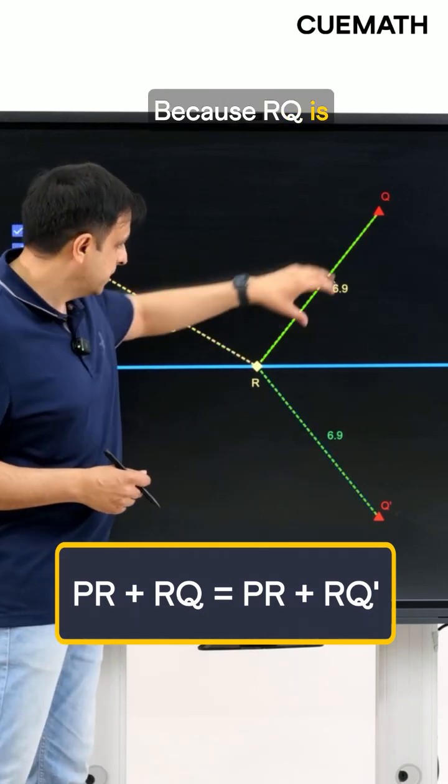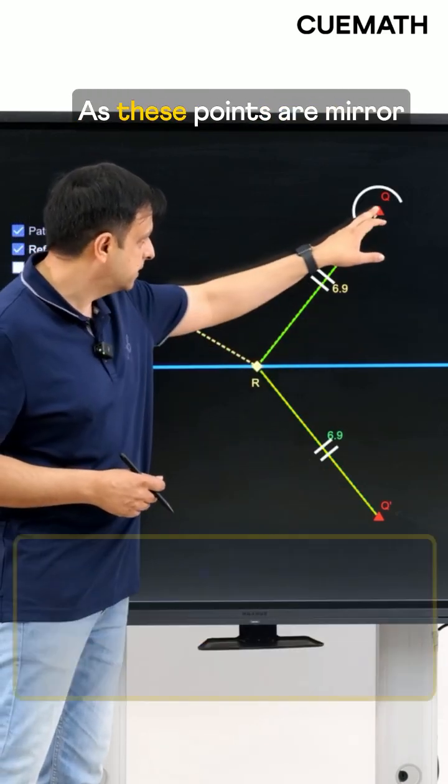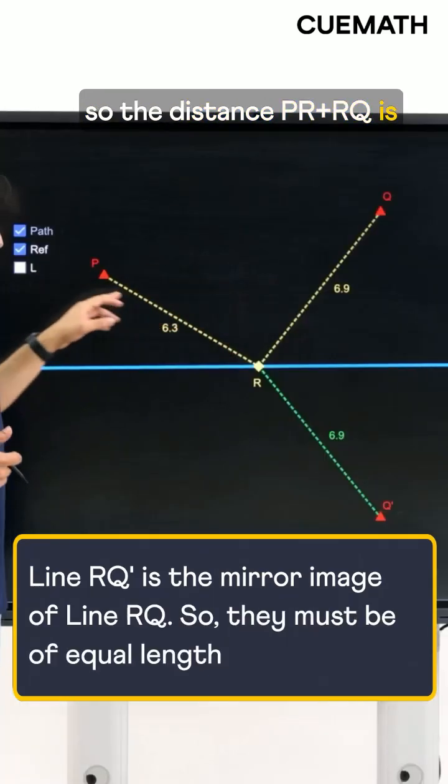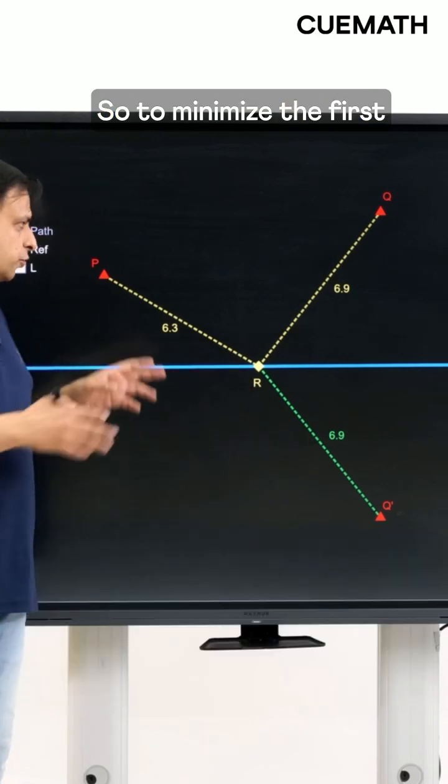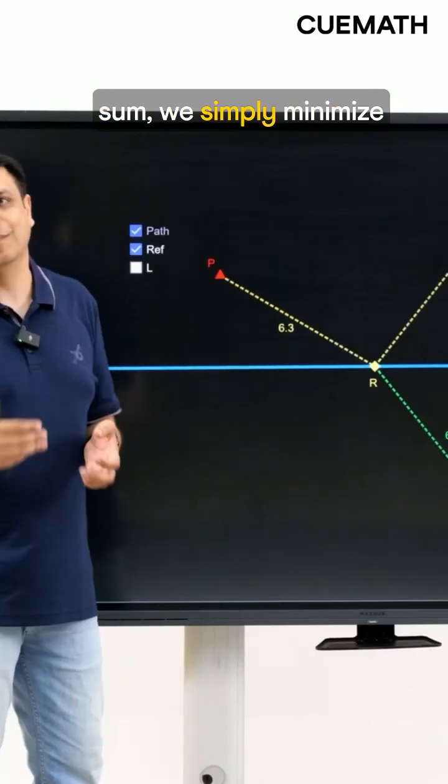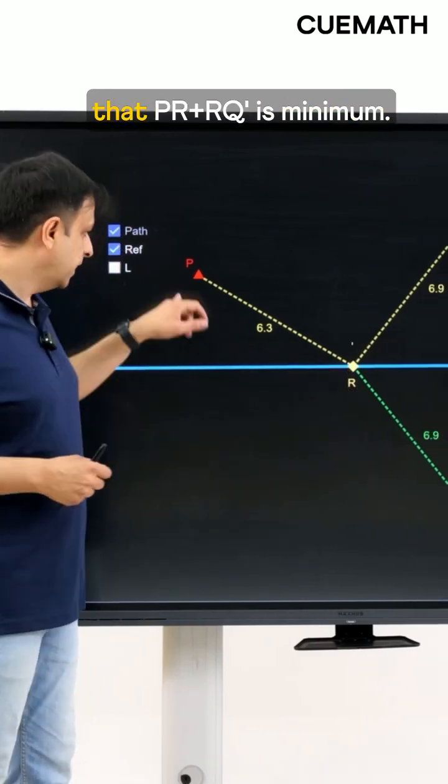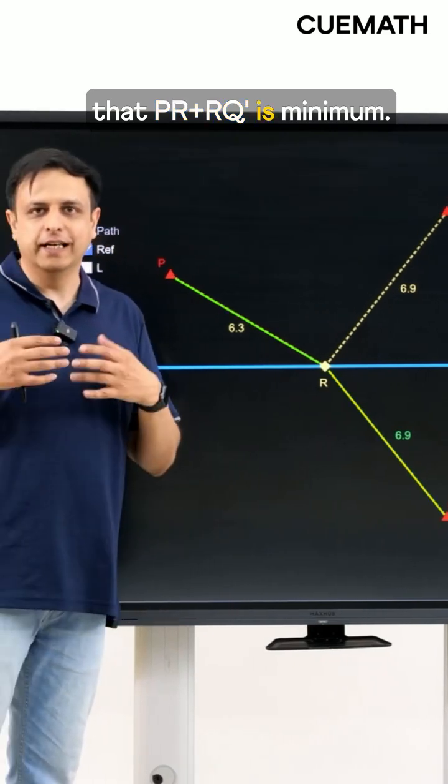Why? Because RQ is the same as RQ dash as these points are mirror images in this line. So the distance PR plus RQ is the same as PR plus RQ dash, so to minimize the first sum we simply minimize the second sum, which means we find the location of R such that PR plus RQ dash is minimum.